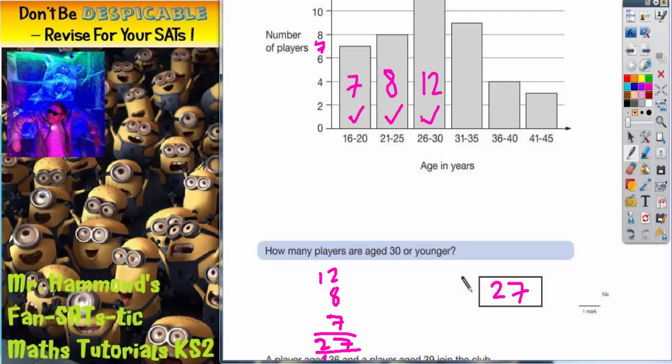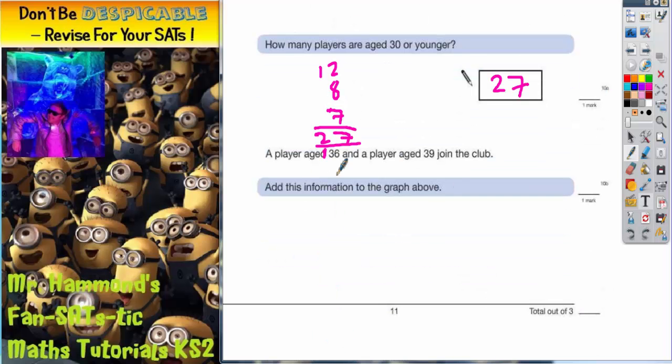So I have a different colour for the second part. A player aged 36 and a player aged 39 join the club. Add this information to the graph above.